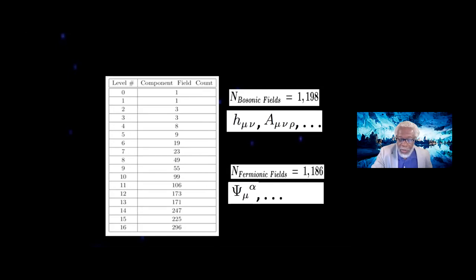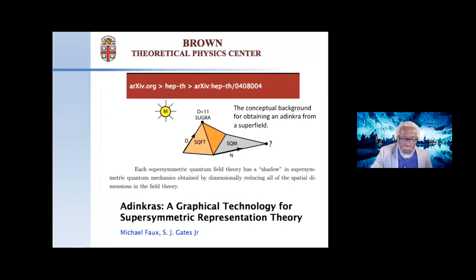So we can now answer this question. The simplest superfield that contains the physical graviton, the graviton in 11 dimensions and the 3-form, as well as the gravitino in 11 dimensions, actually has 1,198 different bosonic fields and 1,186 fermion fields. And you might say, well, wait a minute, Jim, you have not restored the equality. Well, yes, I have. Because what I haven't told you is that these fields come in different representations of the Lorentz group. And when you take that into account, exact equality is established between all the bosons in the theory and all the fermions in the theory.